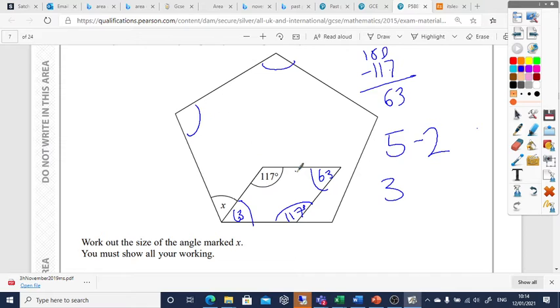3 is the amount of triangles if I wanted to break it up, so let's times that by 180. So 3 times 180 equals 540. So I know my total internal angles is going to be 540. I'm going to divide that by 5 because there's five angles, so I know one of them is going to be 108.